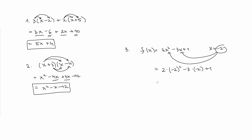The order of operations states that the first thing we have to simplify is the exponent: (-2)² equals positive 4. So 2 times 4 minus 3 times negative 2 plus 1 gives us 8, then negative 3 times negative 2 gives us positive 6, and plus 1. The final answer is 15.